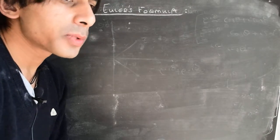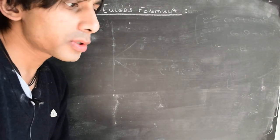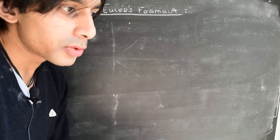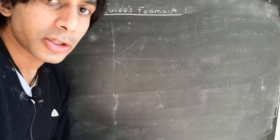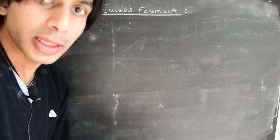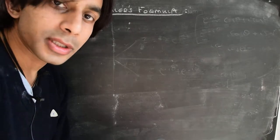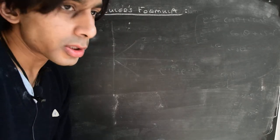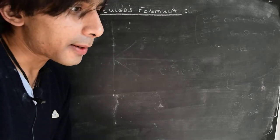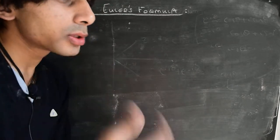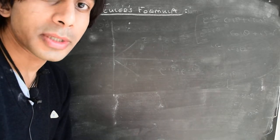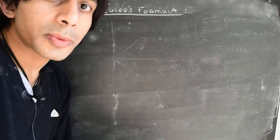Hi there. In the previous videos we introduced the complex exponential — basically it was introduced as a generalization of the real exponential, whereby we wanted to retain some of the properties of the real exponential and therefore define the complex exponential. In the process we also came up with Euler's identity, so let's use Euler's identity to represent a couple of numbers on the complex plane to see how it works and discuss a couple more ideas.